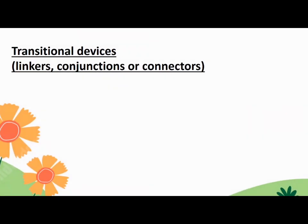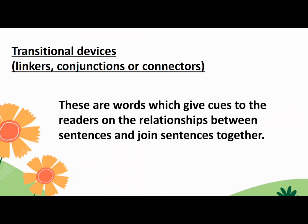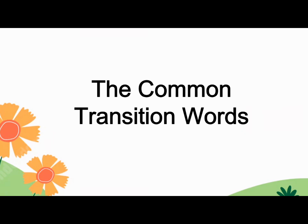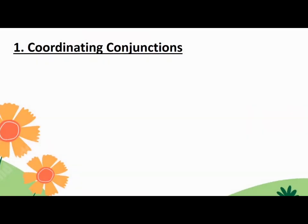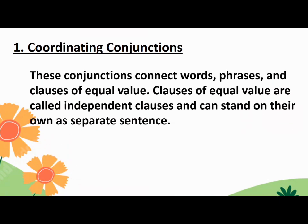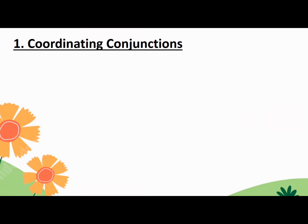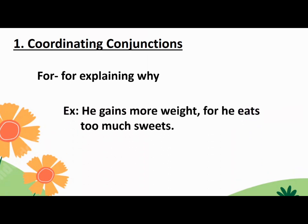The fourth type is transitional devices or linkers, conjunctions or connectors. These are words which give cues to the readers on the relationships between sentences and join sentences together. There are different common transition words. The first is coordinating conjunctions, which connect words, phrases, and clauses of equal value. Independent clauses can stand on their own as a separate sentence. The first example is 'for,' used for explaining why. Example: He gains more weight for he eats too much sweets.